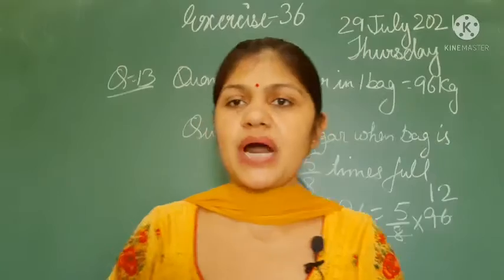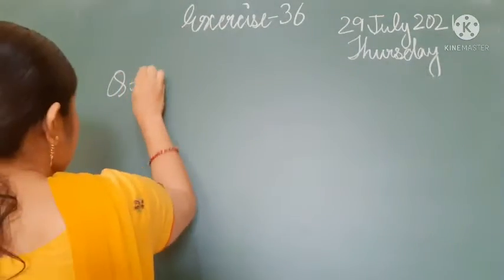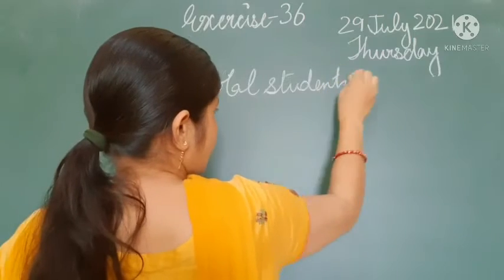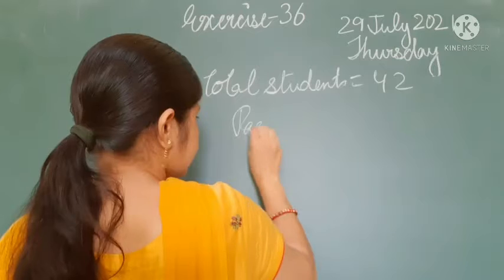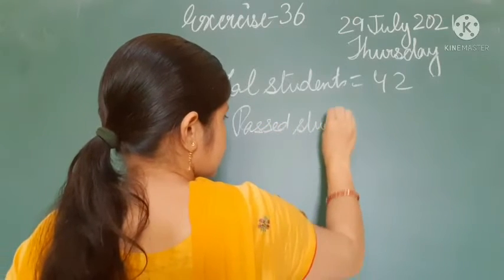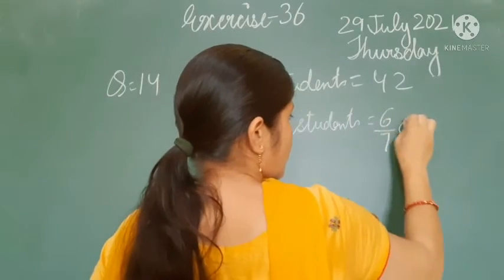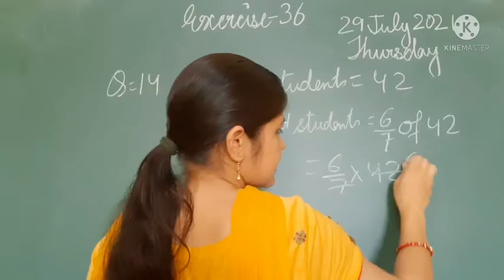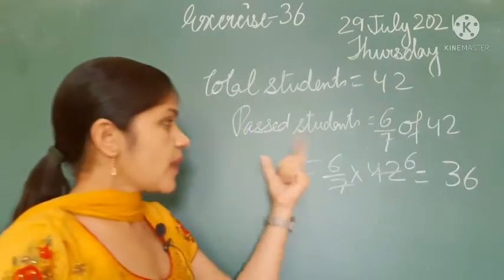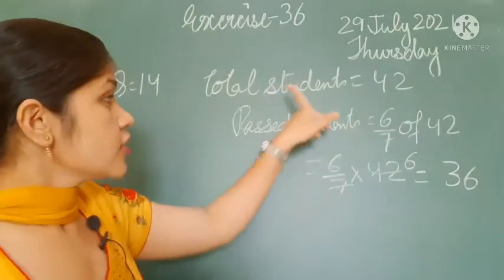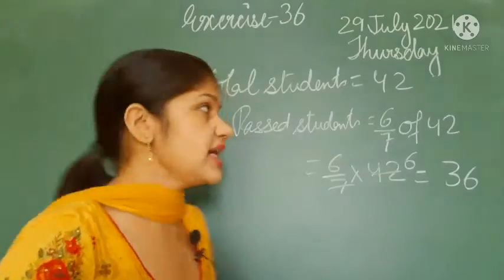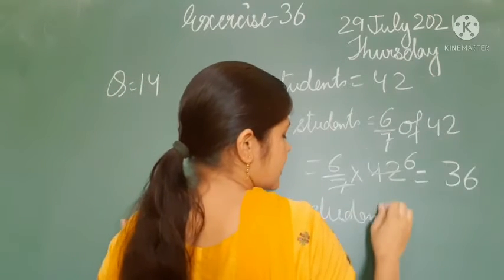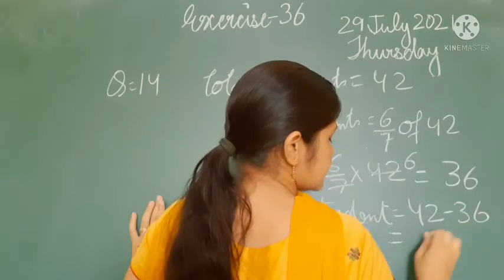We calculate 6 by 7 of 42, meaning 6 by 7 multiplied by 42. 7 sixes are 42, so 7 cancels — the passed students are 36. Failed students = total − passed = 42 − 36 = 6. So 6 students failed.